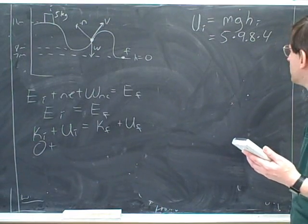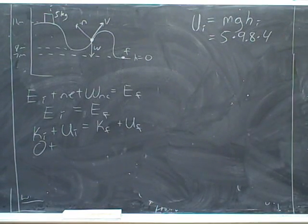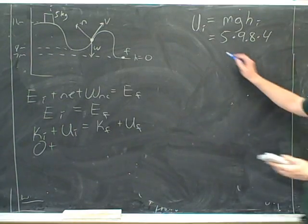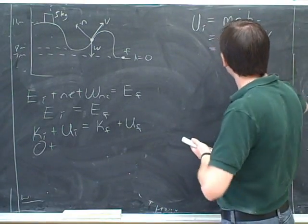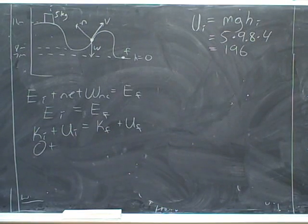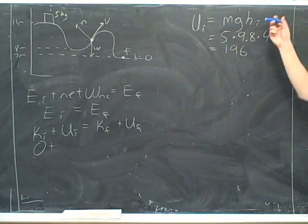431.2. One of us made a mistake. Oh, I put, for some reason, 11 instead of 5. 196. Okay. What would be the units on that? Joules. Because it's a type of energy.